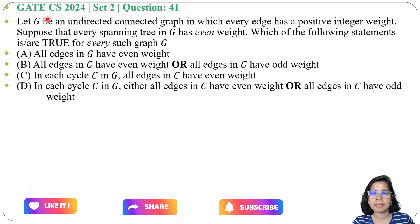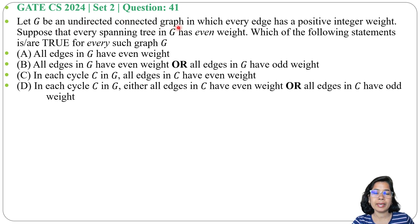Let's solve one previous question of spanning tree. This question was asked in GATE year 2024 set 2, question number 41. Let G be an undirected connected graph in which every edge has a positive integer weight. Suppose that every spanning tree in G has even weight. Here every spanning tree in G has even weight means their sum is even. Which of the following statements is or are true for every such graph G? And 4 options are given.